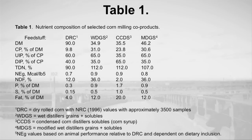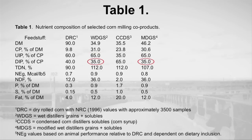Table 1 contains the nutrient compositions of the three primary co-products relative to corn. Both wet and modified distillers grains plus solubles contain approximately 30% crude protein, of which 65% is not degraded in the rumen — sometimes referred to as bypass protein — and is absorbed in the small intestine. The other 35% of crude protein is degradable intake protein, or DIP, used by rumen microorganisms for bacterial crude protein production, which is also available to ruminants when bacteria are flushed into the small intestine and digested.